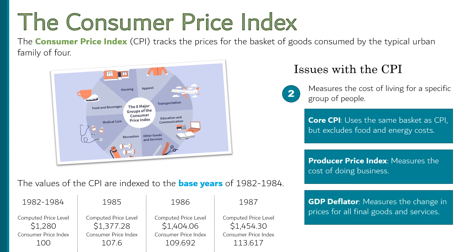Last, we have the GDP deflator. The GDP deflator uses the whole set of goods and services produced to measure inflation, so it tracks the change in prices of all goods and services from one year to the next. But if there are any new goods and services, it will just use the new prices for that year. That means the basket of goods is allowed to change from year to year, solving a lot of the problems faced by the CPI. For this reason, many economists prefer the GDP deflator.